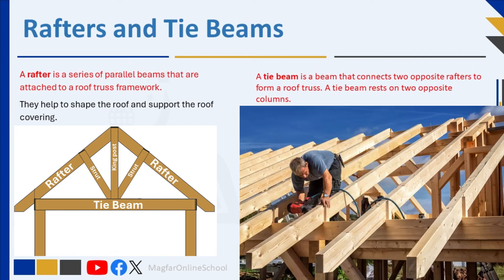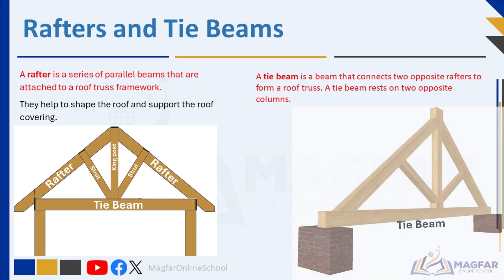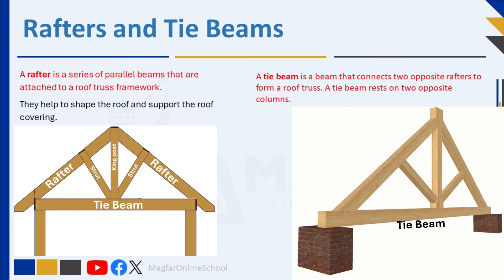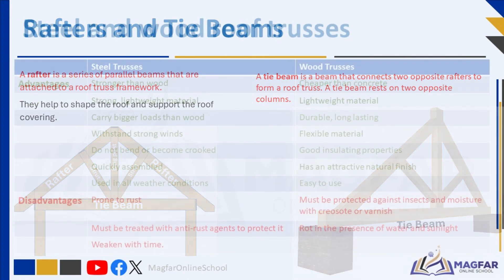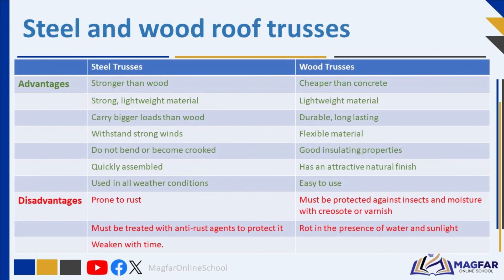A tie beam is a beam that connects two opposite rafters to form a roof truss. A tie beam rests on two opposite columns and joins the two diagonal sides of a triangular structure. A tie beam usually connects two opposite rafters to form a roof truss. As noted earlier, trusses can be made of steel or wood.